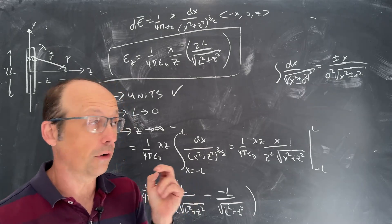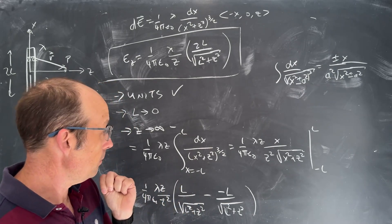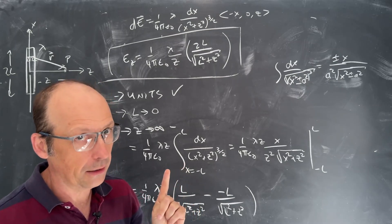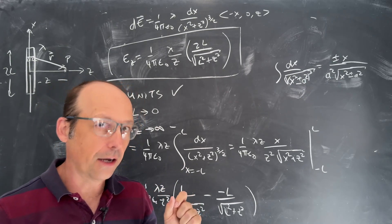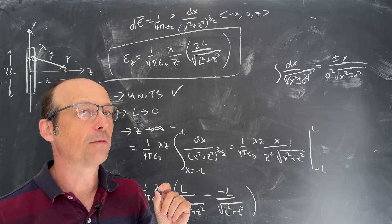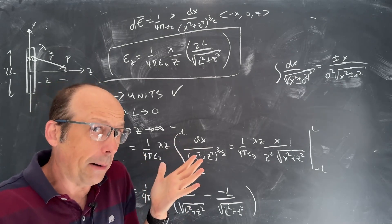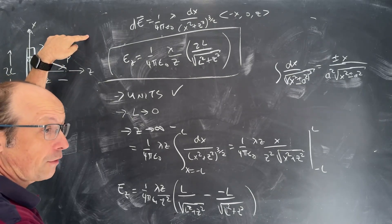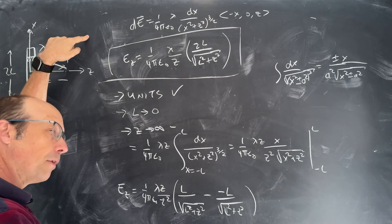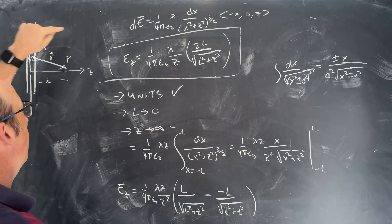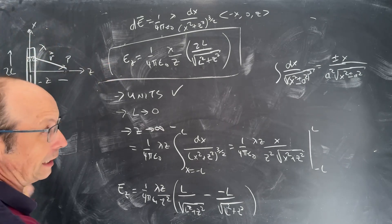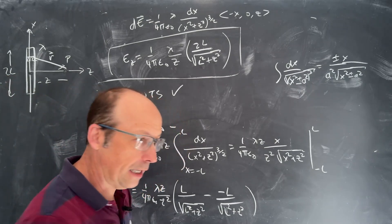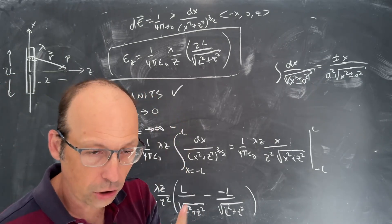That's the electric field due to this charged rod. In a follow-up video I'm going to redo this problem numerically in Python by breaking the rod into small pieces — it's fun and useful to think about. For example, if the observation point were somewhere other than the midpoint, the integral becomes much more complicated to evaluate analytically. But there you go — that's the electric field due to a charged rod.